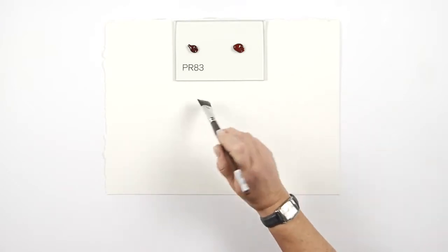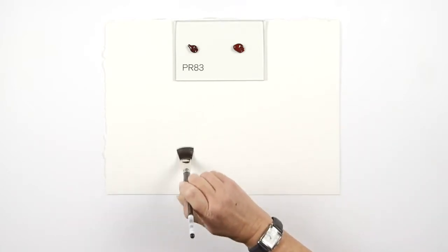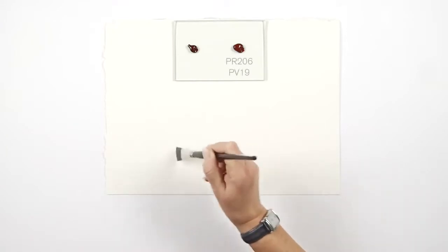Alizarin crimson which is PR83 and permanent alizarin crimson which is a combination of PR206 and PV19.